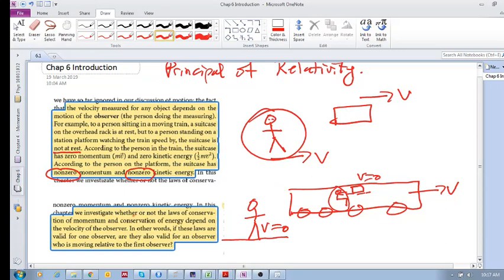But also, are the laws of conservation of momentum and conservation of energy the same in every reference frame? Do they depend on the velocity of the observer? In other words, if these laws are valid for one observer, are they also valid for an observer who is moving relative to the first observer? So the conservation laws - conservation of momentum, conservation of energy - are they the same in different reference frames? Hopefully that makes a bit of sense. See you in the next one.